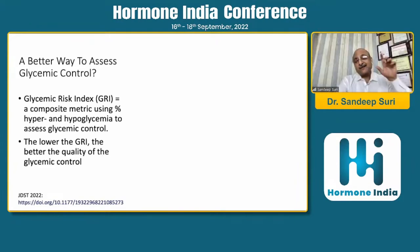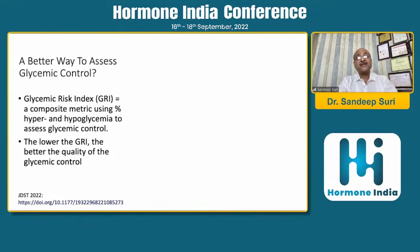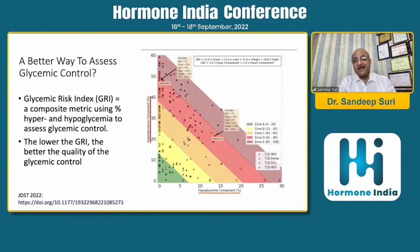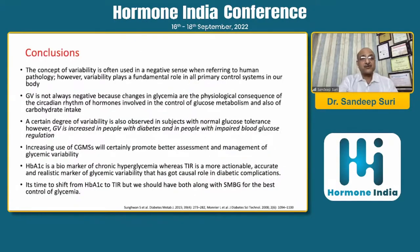When looking at time in range, also look at time below range. It is important that time in range be clubbed with time below range, and that makes sense for the glycemic risk index. The glycemic risk index equation has more weight for very low hypoglycemia than low, and less weight for very high and high hyperglycemia. So lower hypoglycemia should be especially considered when you talk about time in range.